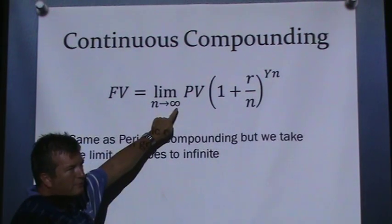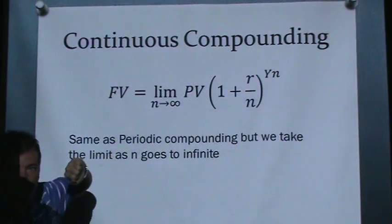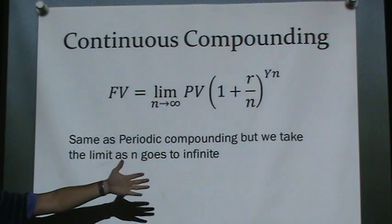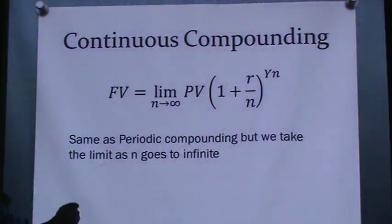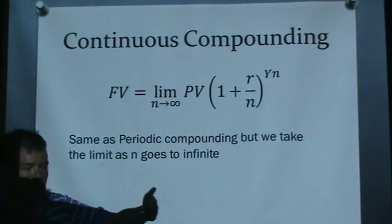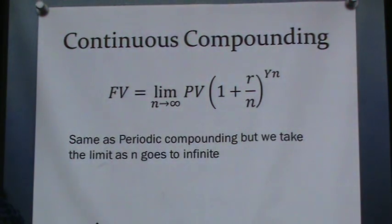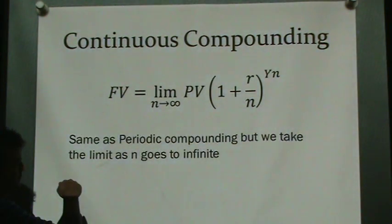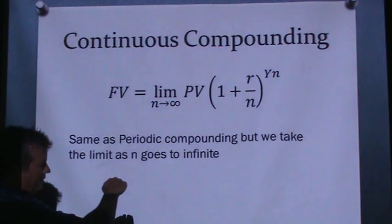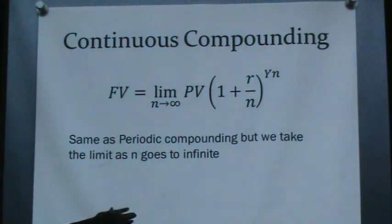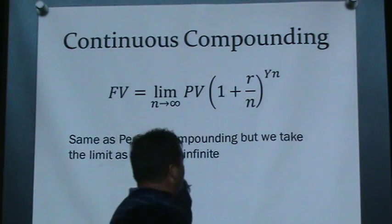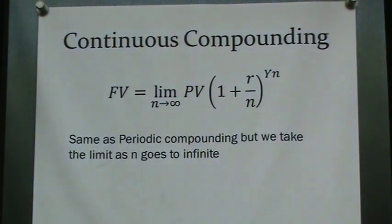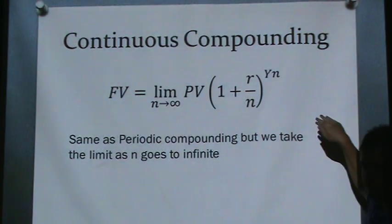If we let N go to infinity, we're essentially making payments all the time — like the bank is constantly taking a tiny amount from your account. We want to remove the idea that your balance drops at discrete intervals. As we let N go to infinity, we take away the steps and make it a perfectly smooth payment stream.